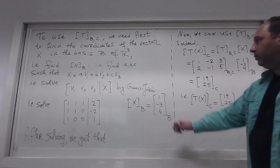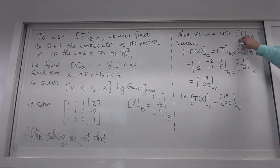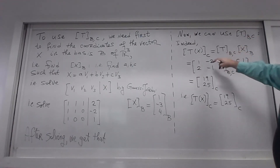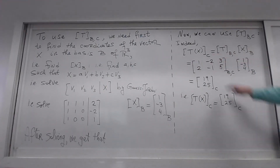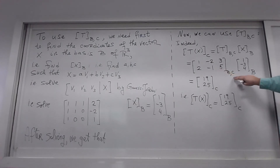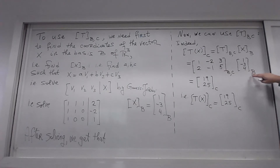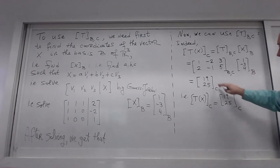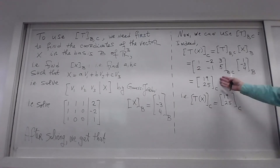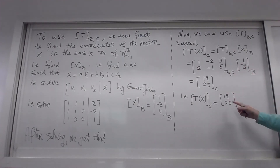Now we can use those coordinates. We multiply the representation matrix relative to bases B and C by the coordinates of x in basis B. The result gives us the coordinates of the image T(x) in basis C. When we compute all this, we get 19 and 25 — so the coordinates of T(x) in basis C are (19, 25).